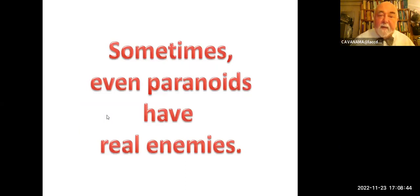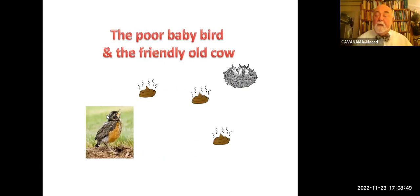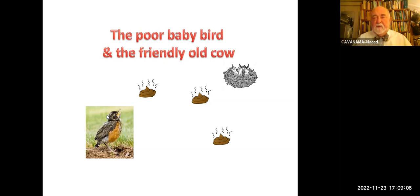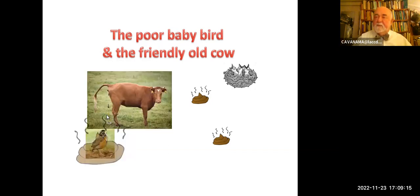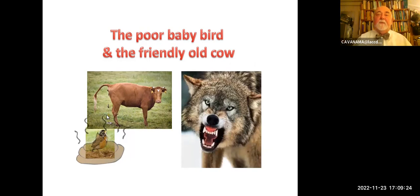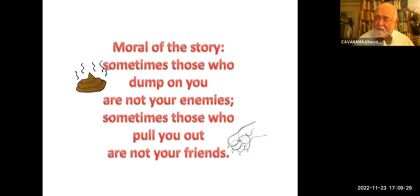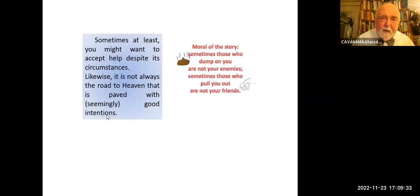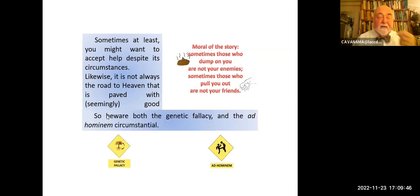Well, sometimes even paranoids have real enemies. Story of the poor baby bird and the friendly old cow: there's a little baby fledgling bird who jumps out of the nest, can't fly, lands on the ground. It's cold and he's angry. The friendly cow comes along — can't do much for this bird, but at least can dump a cow flop on there to keep him warm. So the cow does dump it on the little bird. The bird's not having this bunch of cow crap. Along comes someone else to help him out — the friendly wolf — who pulls him out. The moral of the story: sometimes those who dump on you are not your enemies. Sometimes you might want to accept help despite its circumstances. Likewise, it's not always a road to heaven that's paved with good intentions.